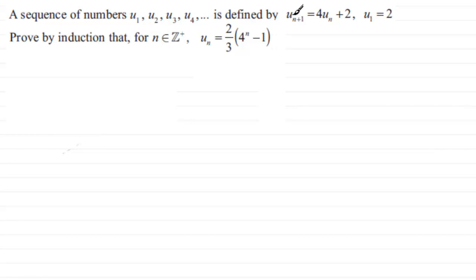The sequence is defined by u_{n+1}, that's the n plus 1th term in the sequence, is equal to 4 times the nth term in the sequence, u_n, plus 2, where the first term in the sequence, u_1, is equal to 2.